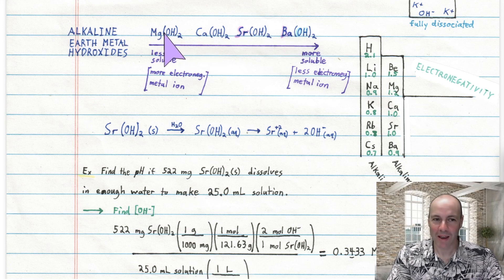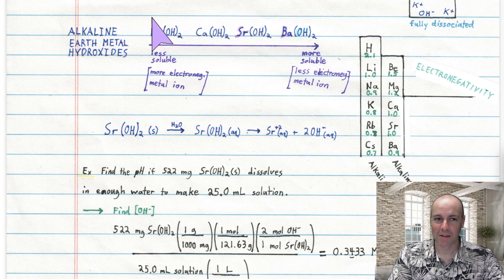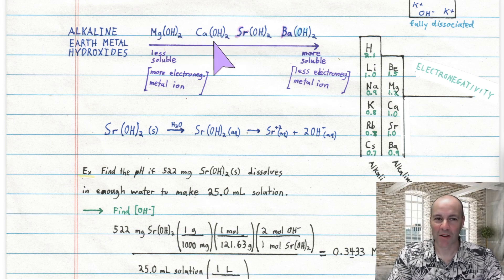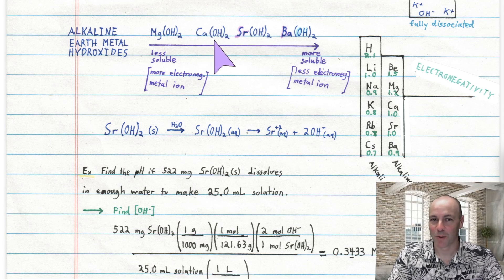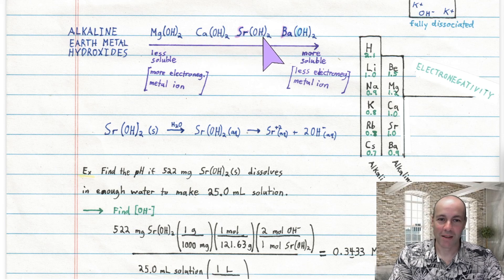Though I have seen people call magnesium and calcium hydroxide strong bases because — especially calcium — it's slightly soluble in water. But strontium and barium hydroxides are very soluble in water.